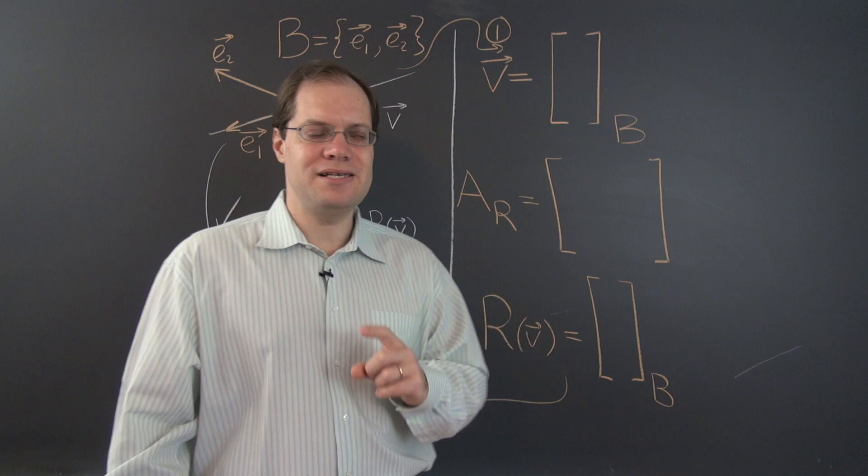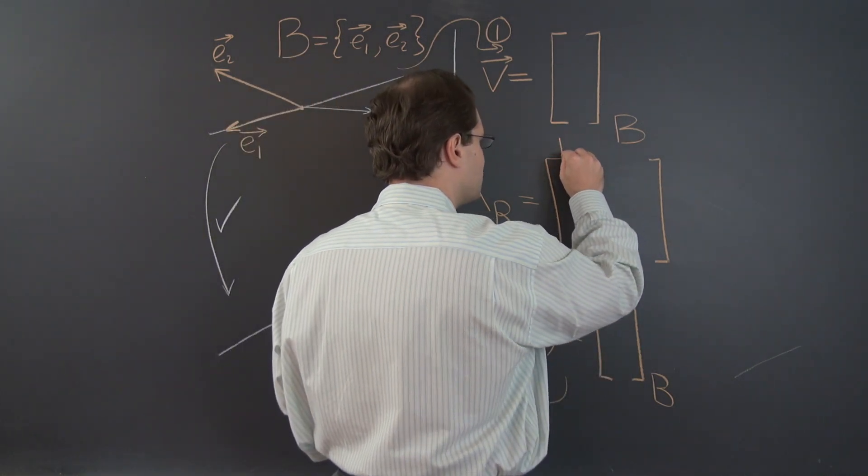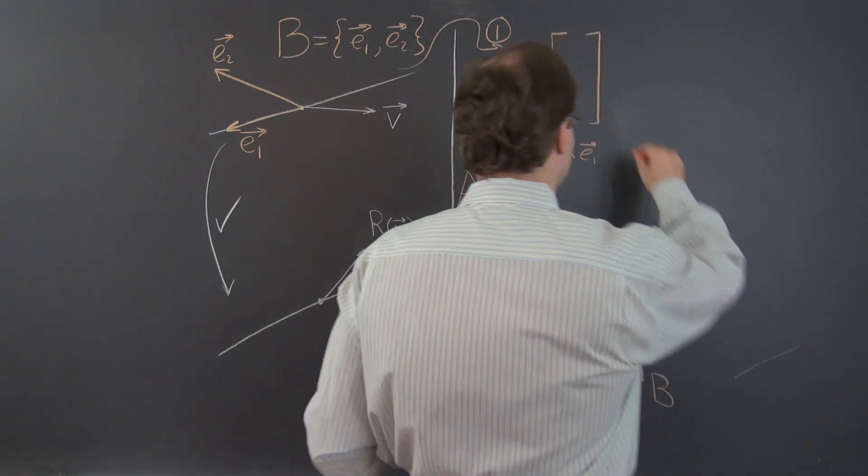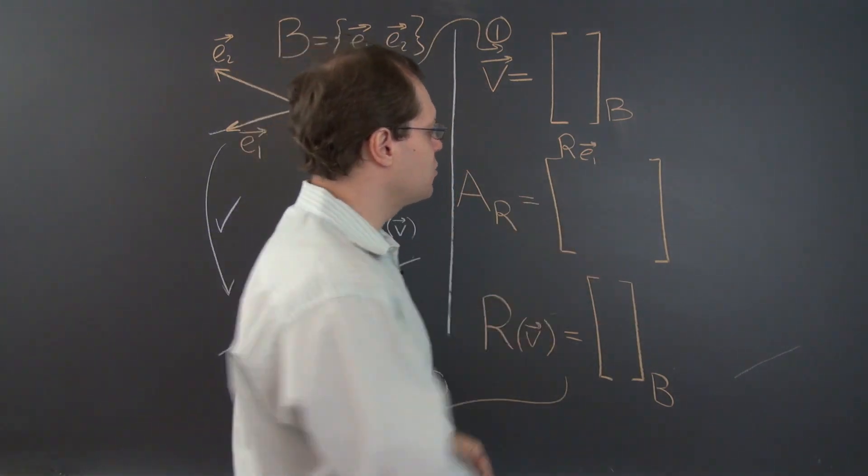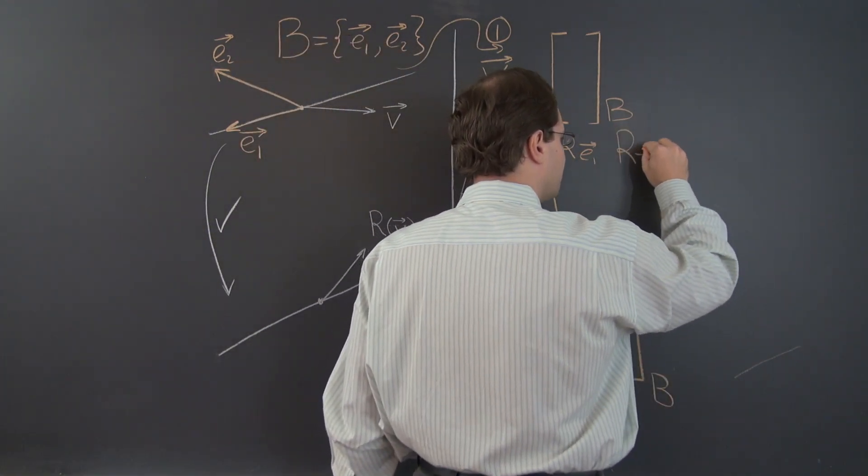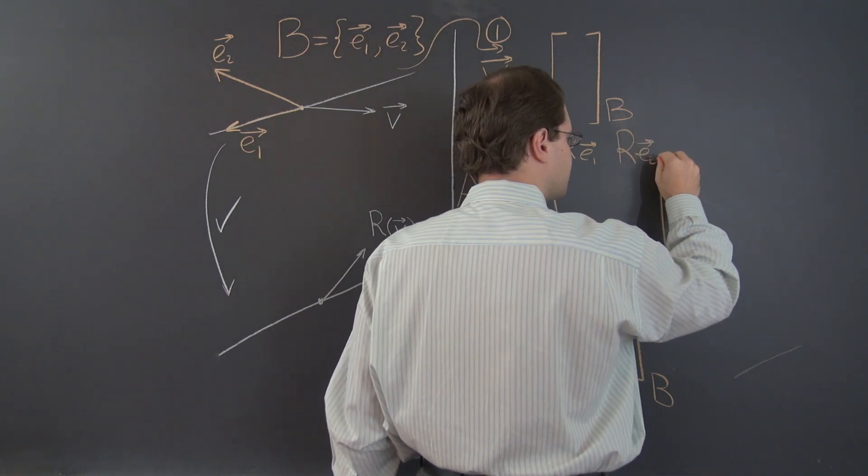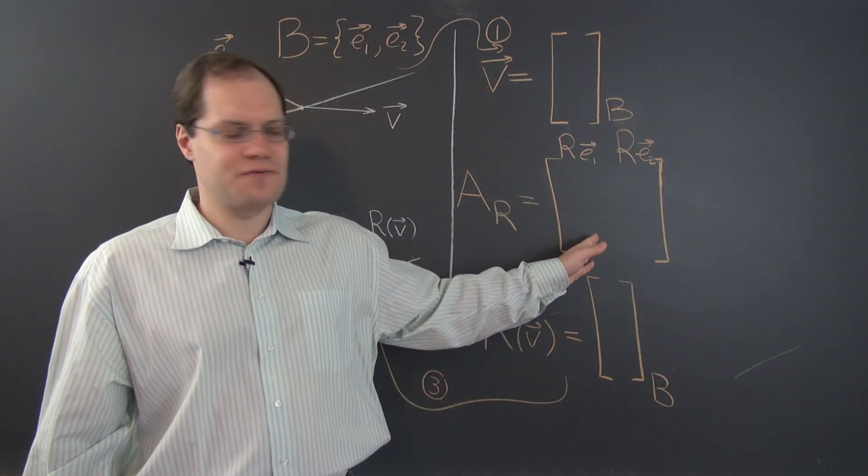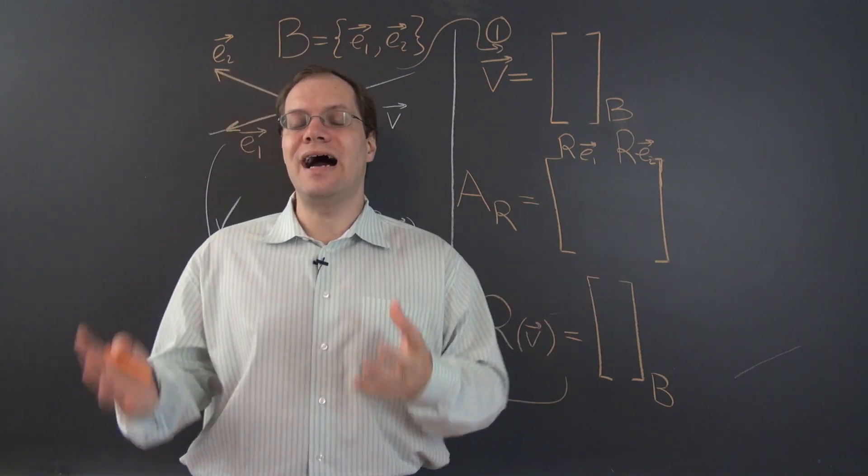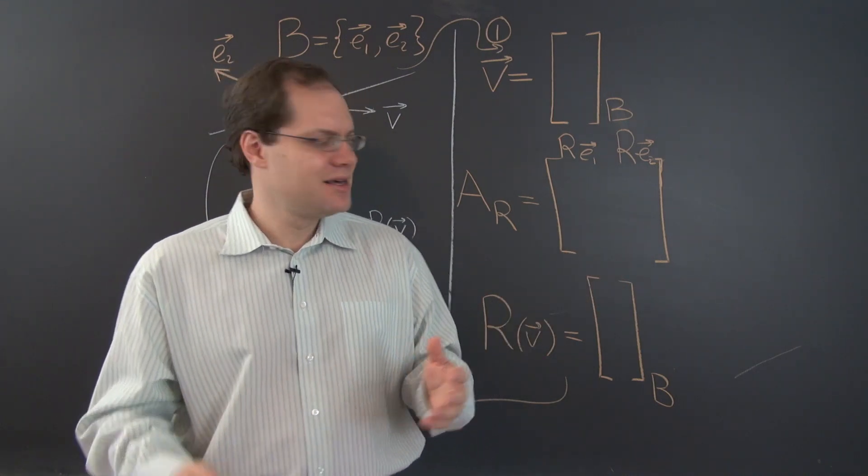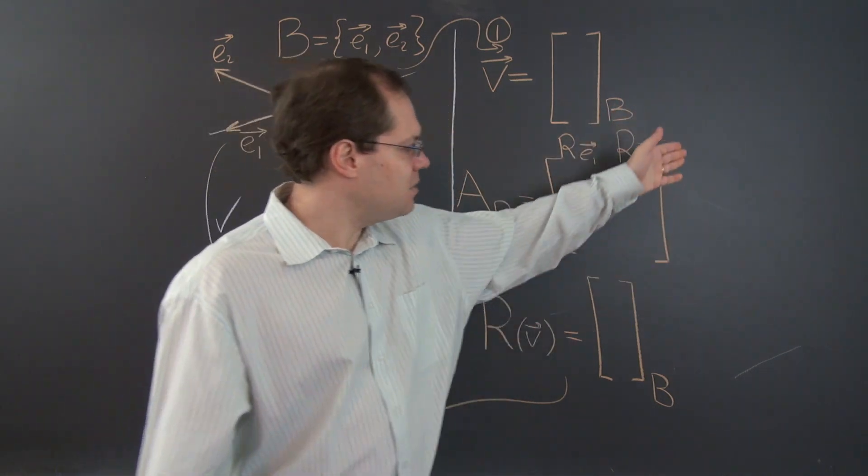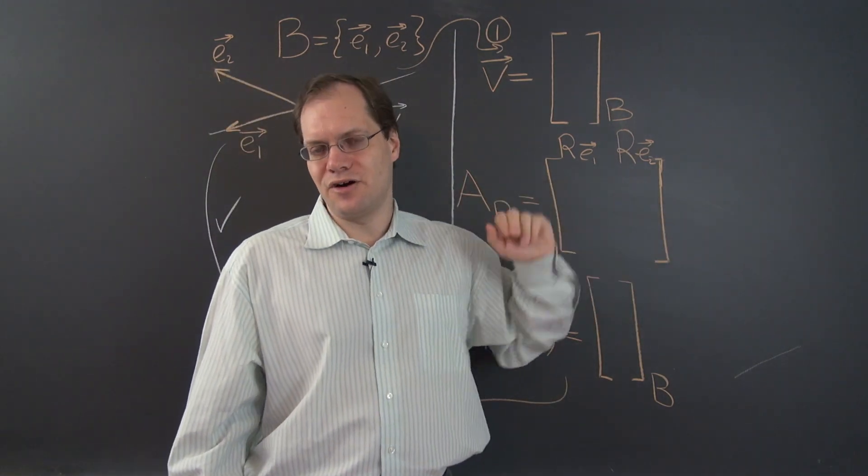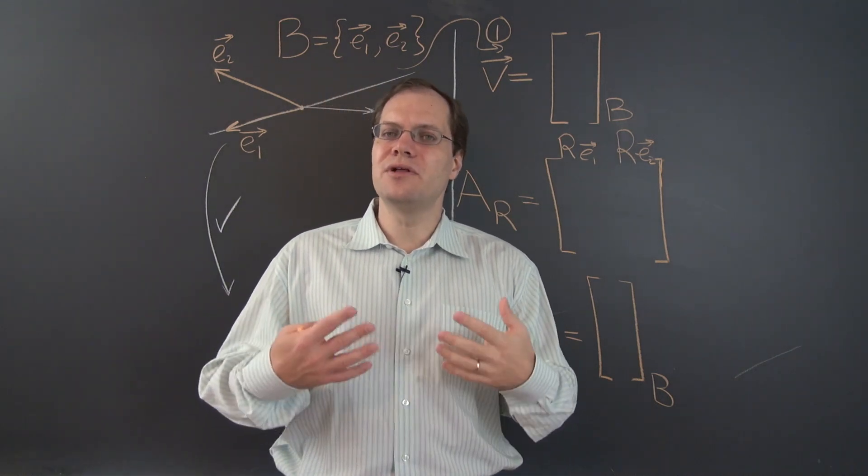Components of the images of the basis vectors. Let's concentrate on the words images of the basis vectors. So the first column will correspond to R of E1, and the second column will correspond to R of E2. The first column corresponds to R of E1. The second column corresponds to R of E2. And in higher dimensions there would be more basis elements. And we would have the image of E3, image of E4, or however many dimensions there are. That's how many columns there are in a matrix. And of course, there's an equal number of rows.